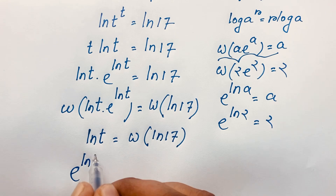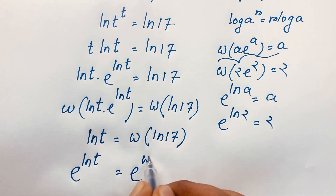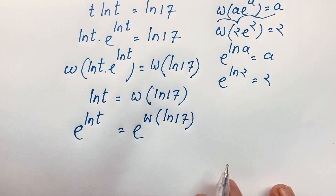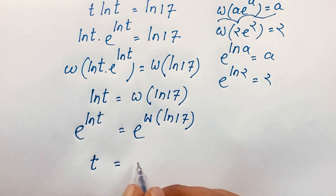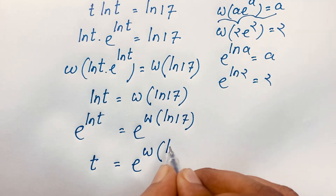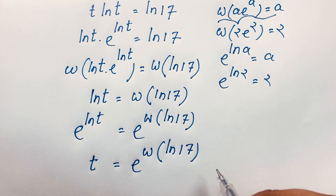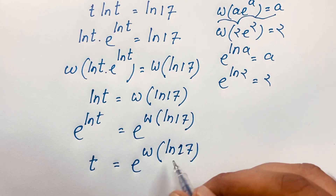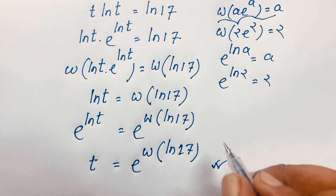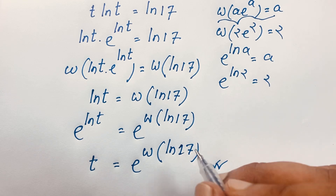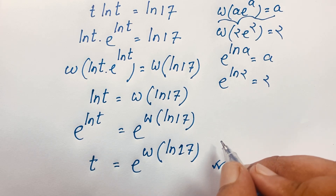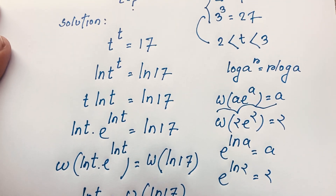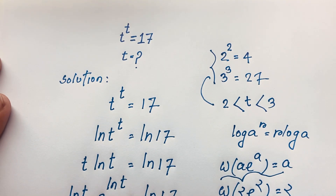Now to find t, I apply e to both sides: e^(ln t) = e^(W(ln 17)). Since e^(ln t) = t, our final answer is t = e^(W(ln 17)). This is the value of t for this math olympiad exponential problem. Thank you all — if you enjoyed this video, please subscribe for more interesting videos. Goodbye!